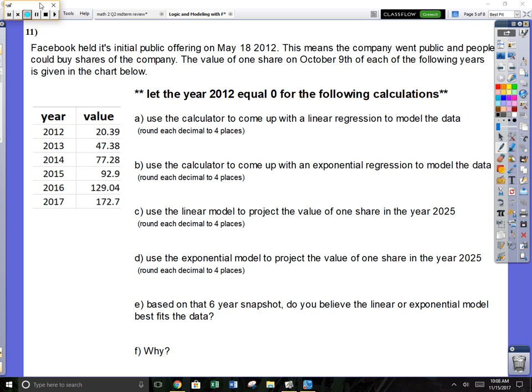Okay, regressions on a calculator. This might show up in problem 11 on the test. Facebook held its initial public offering on May 18th, 2012. This means the company went public and people could buy shares. The value of one share on October 9th of each of the following years is given by the chart below. We're going to look at the data and come up with a linear model and an exponential model to see if we can use it to predict future prices.